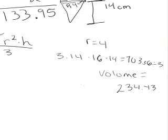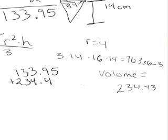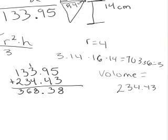Last, we have to add the volume of the cone to the volume of the sphere, which is when you take 133.95 and add it to 234.43, which equals... 5 plus 3 equals 8, 9 plus 4 equals 13, which you have to carry the 1. 4 plus 3 is 7, plus 1 is 8.